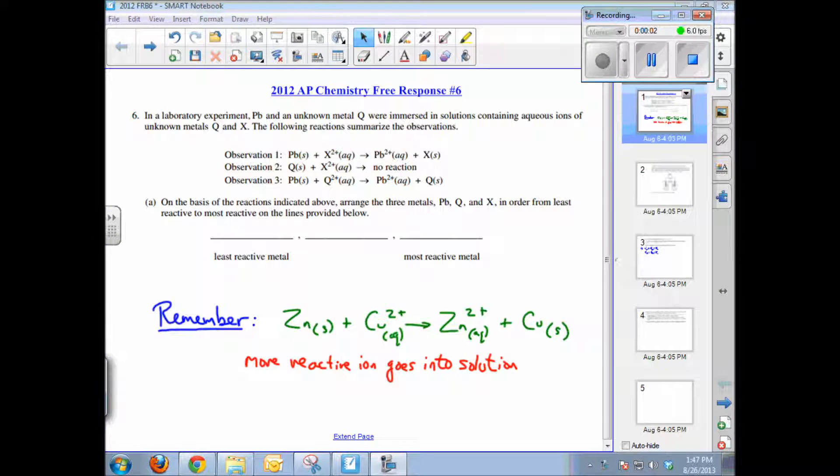This video tutorial will help solve free response question number six from the 2012 AP Chemistry Exam. Let's read through the question. In a laboratory experiment, lead and unknown metal Q were immersed in solutions containing aqueous ions of that same unknown metal Q and X.